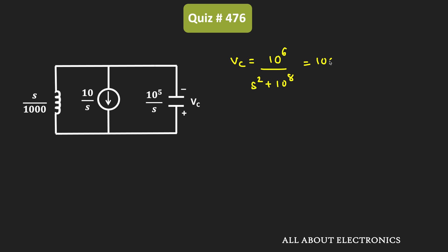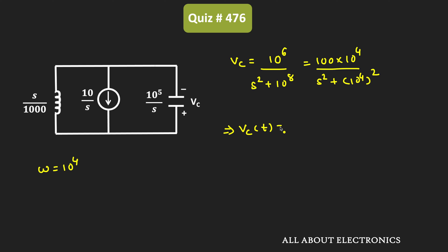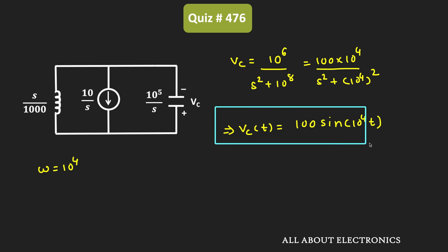We can rewrite this as 100 × 10⁴ divided by (S² + (10⁴)²). Recalling that the Laplace transform of sin(ωt) equals ω/(S² + ω²), comparing gives ω = 10⁴. Taking the inverse Laplace transform, Vc(t) = 100 × sin(10⁴ × t). This is the time-domain expression for the voltage across the capacitor, and the magnitude of Vc is equal to 100 V.